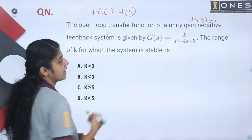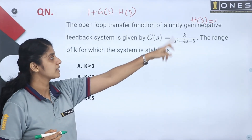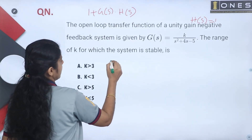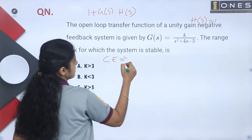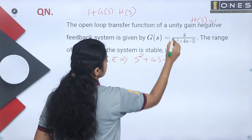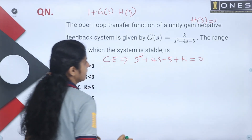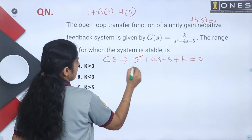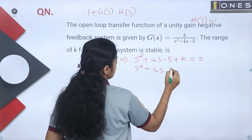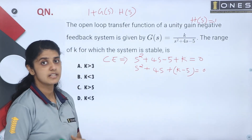The denominator function is s squared plus 4s minus 5, so rearranging, the characteristic equation becomes s squared plus 4s plus k minus 5 equal to 0. That is the characteristic equation.